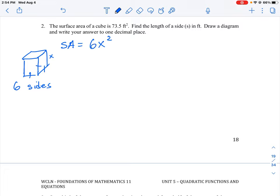And then we also know the total area is equal to 73.5. So we just are simply having an expression to solve here. Six x squared is equal to 73.5.